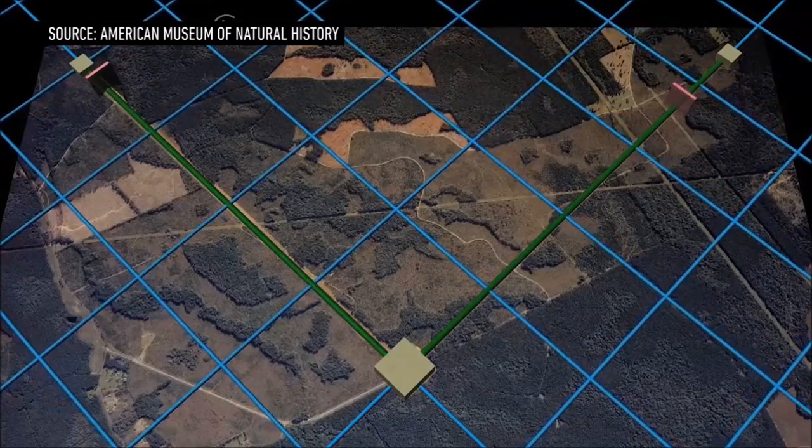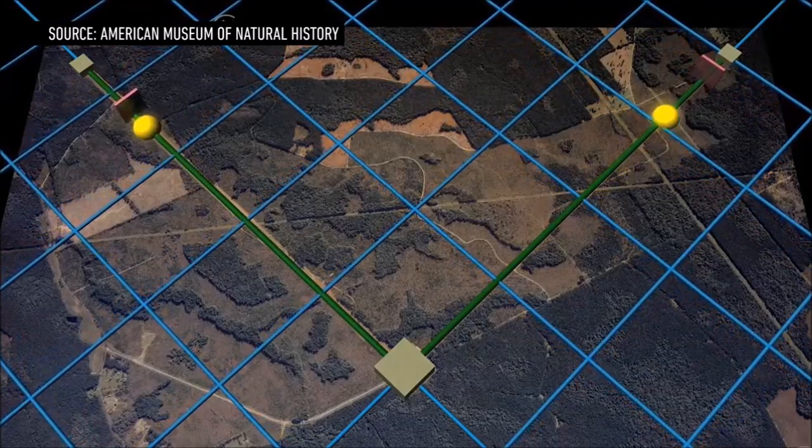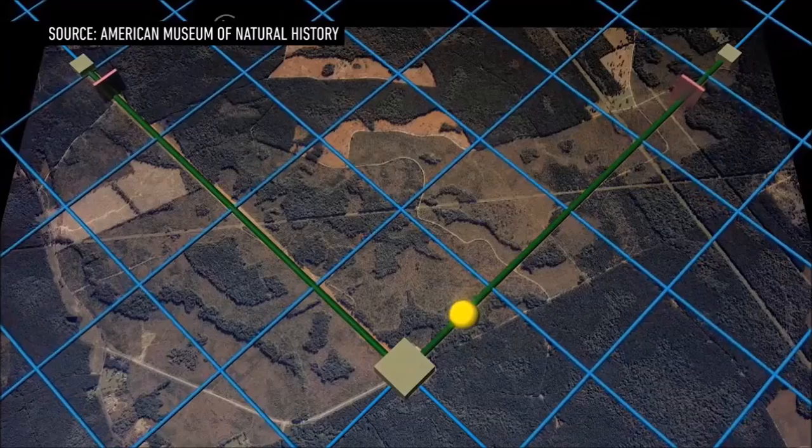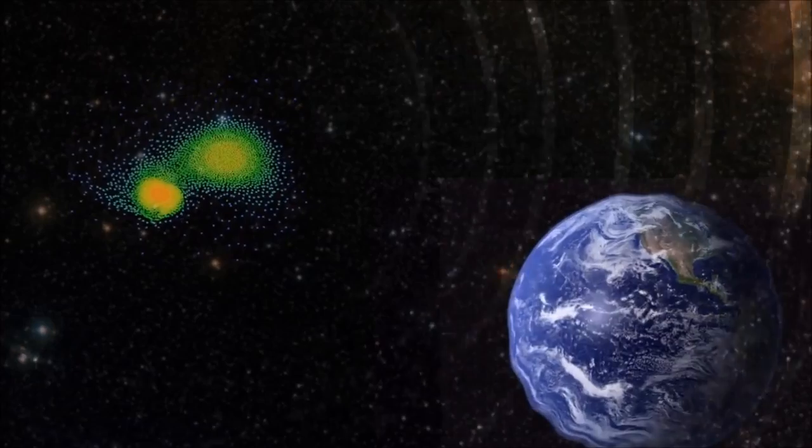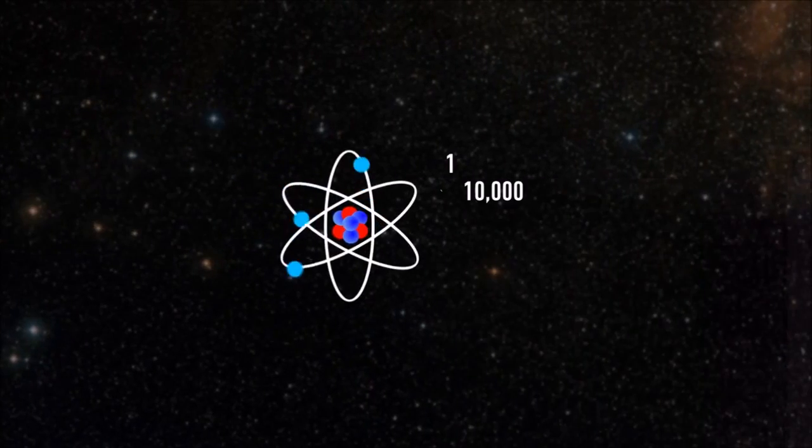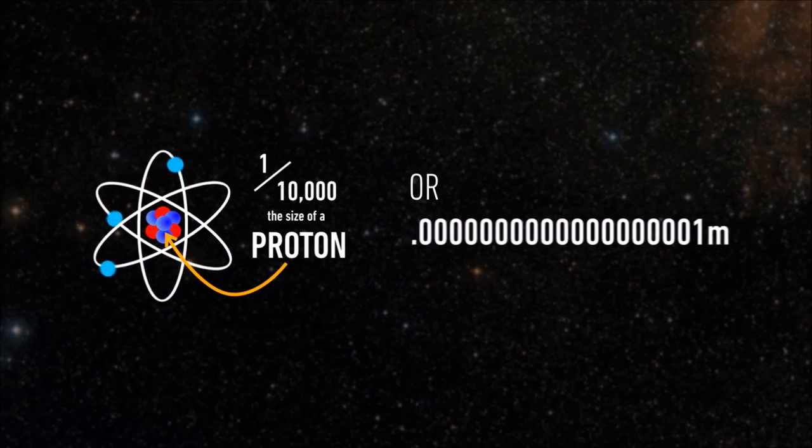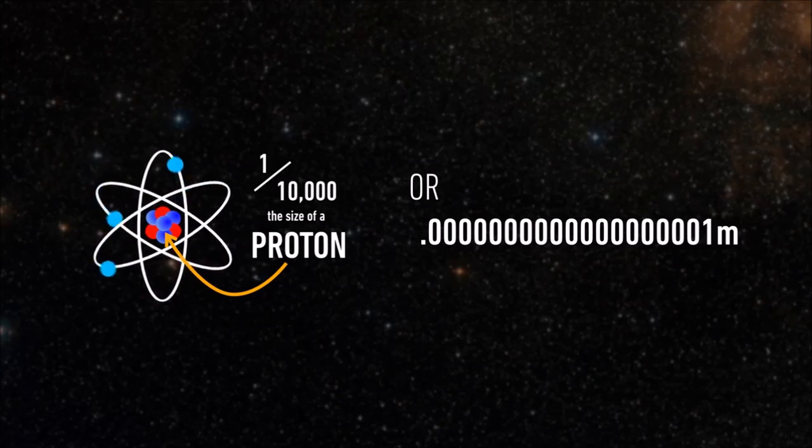The scientists can measure this phenomenon by timing how long it takes for lasers to bounce back from each mirror. The relative movement of these mirrors is incredibly slight. By the time the waves from the black holes make it to Earth, they only change LIGO's instruments by about one ten-thousandth the size of a proton. That means these measurements are incredibly difficult to detect and are very susceptible to error.